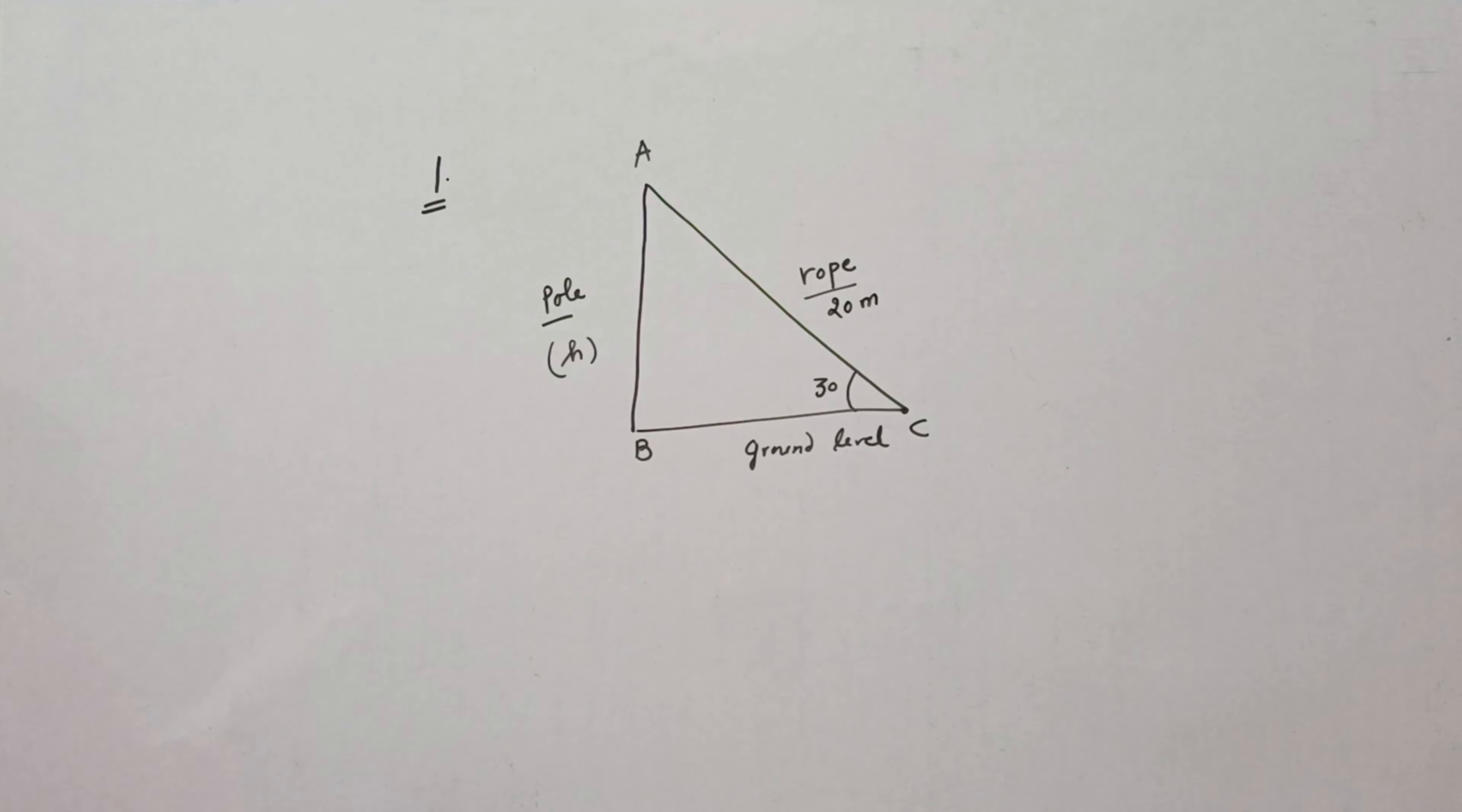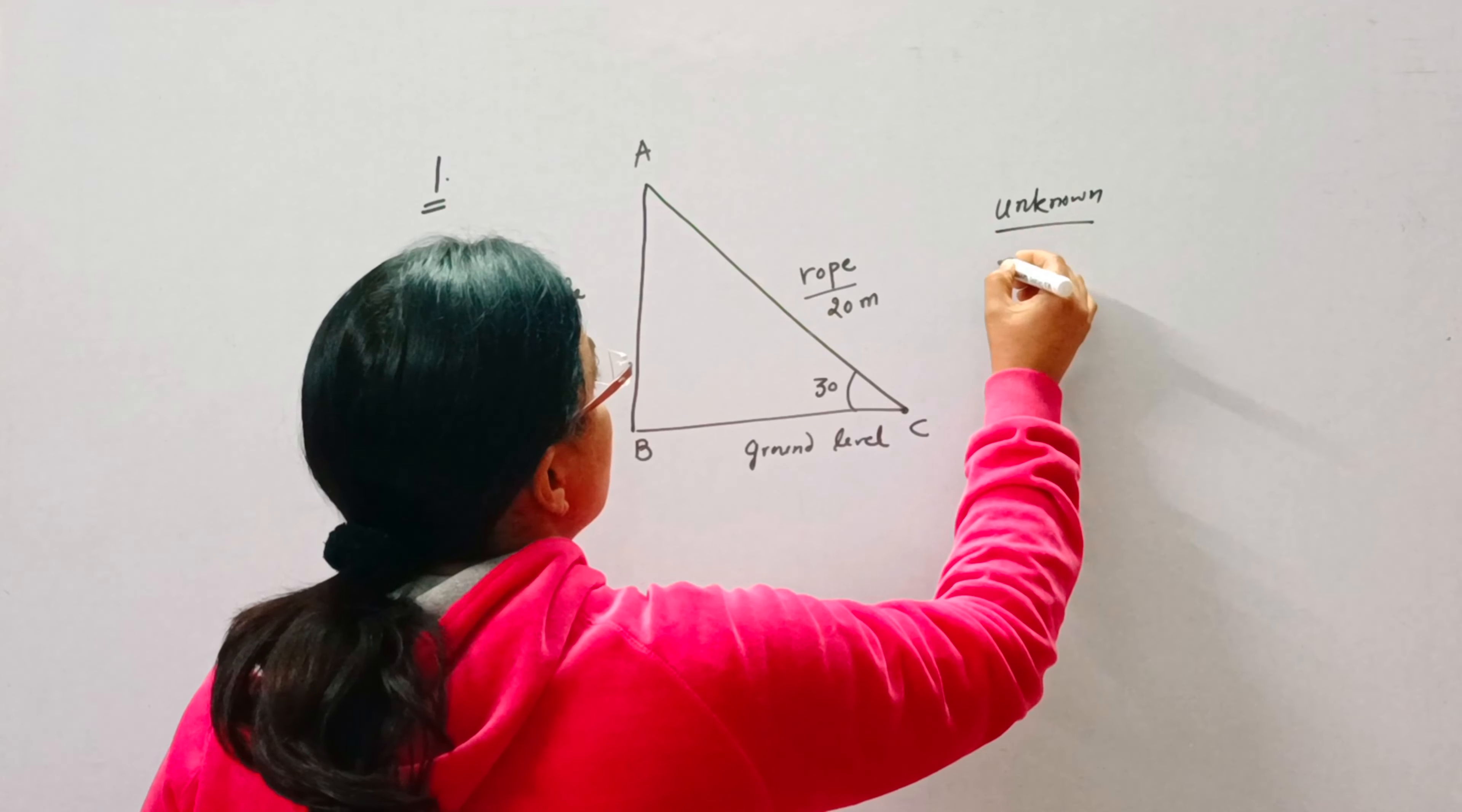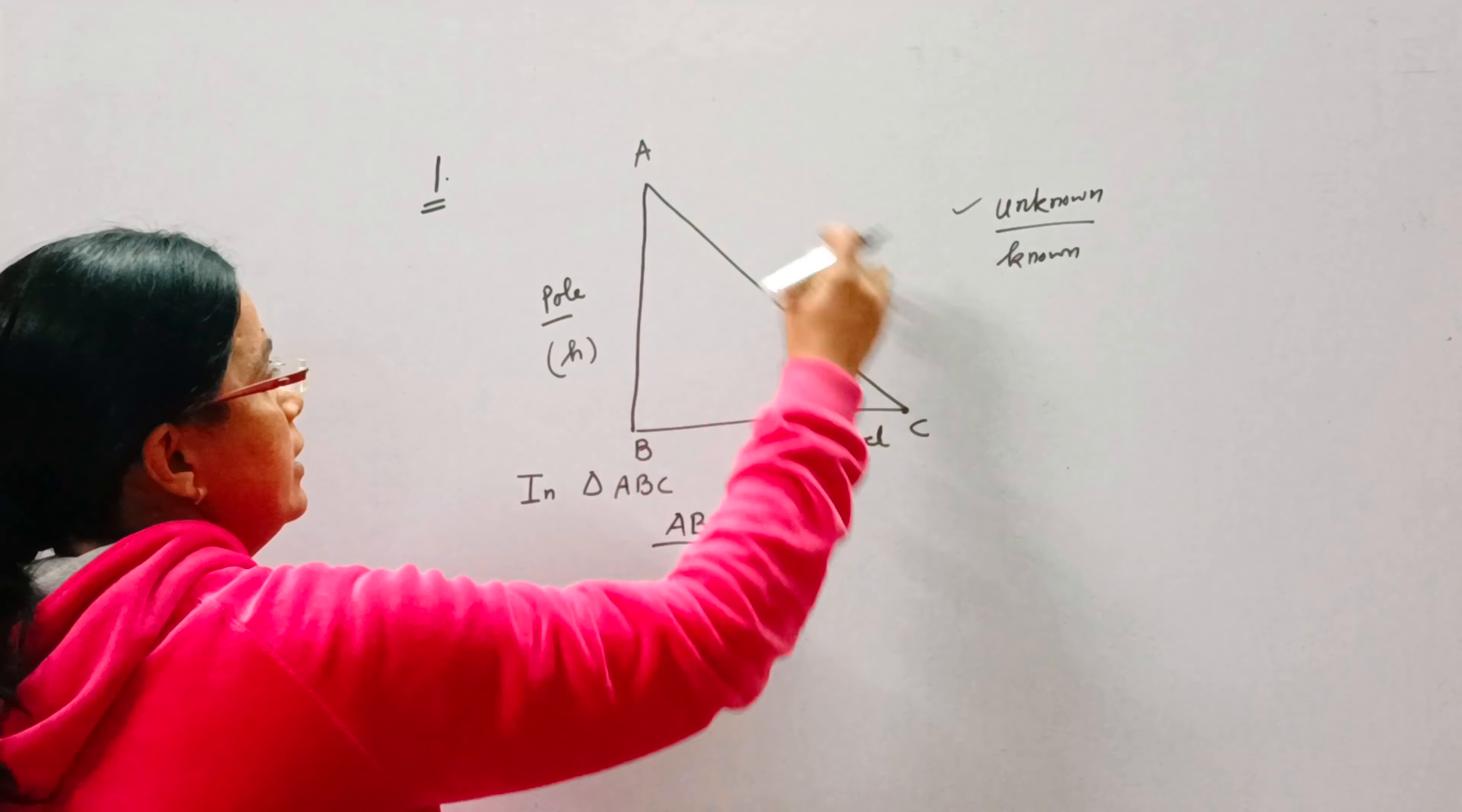Now you can see in this question, if you consider the triangle ABC, then one side is known to us, AC, and the other side is unknown to us. So the basic concept in this question is unknown upon known. Every time you do this question, apply this concept: unknown upon known. In triangle ABC, first of all we will take the side that is unknown to us, that is AB, and the other that is known to us is AC.